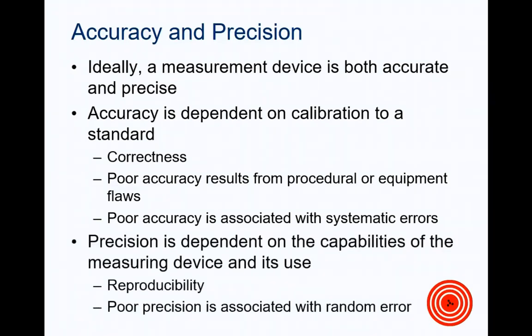Precision, on the other hand, is dependent on the capabilities of our measuring device. The more capable of this, the more we can reproduce our measurements, and that results in greater precision. Poor precision is often associated with random error. So, think back to that graduated cylinder. If the graduations on the cylinder are too far apart, then it would be very difficult for a person to be precise on repeated measurements. If the graduations are much more tightly packed together, then it would be easier for that person to reproduce the same measurement over and over, and therefore, be more precise.